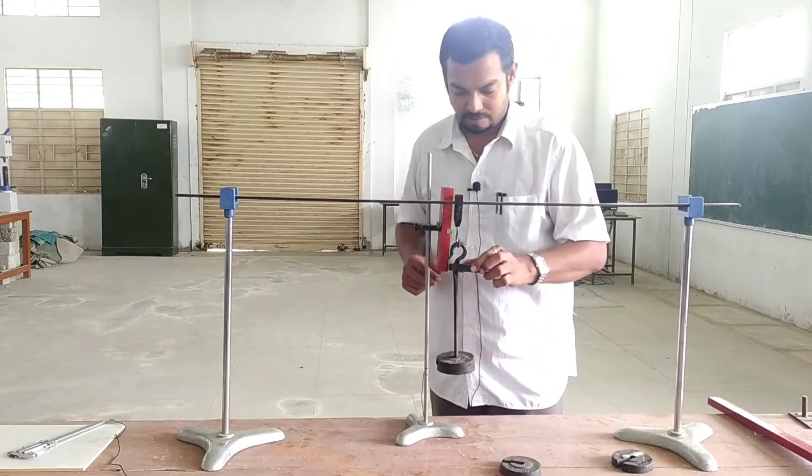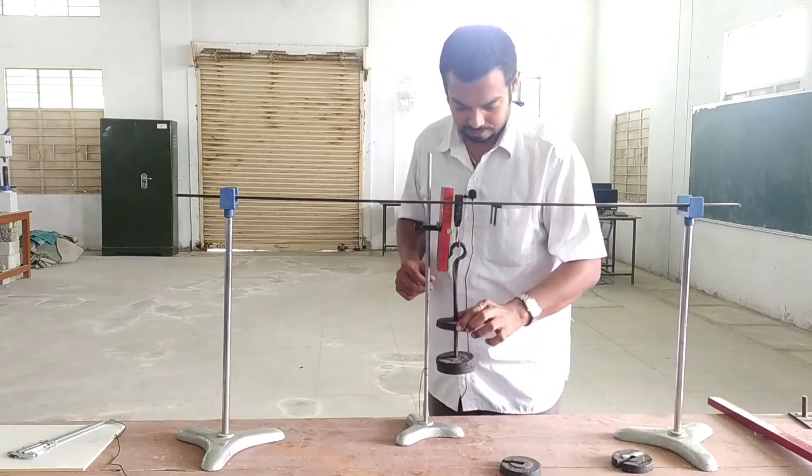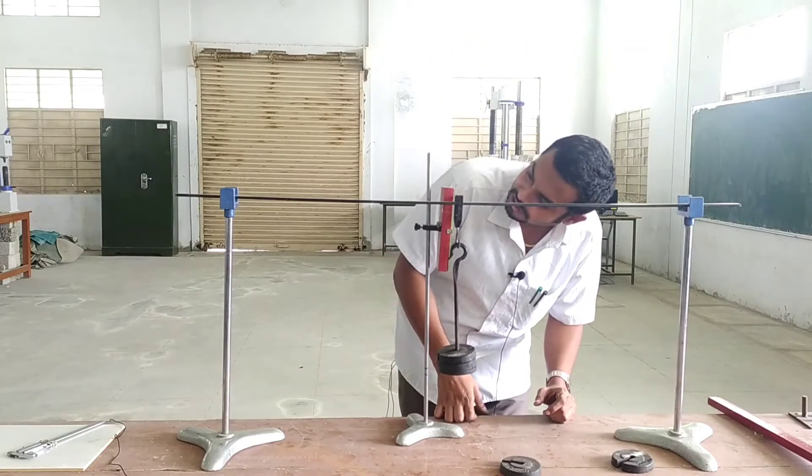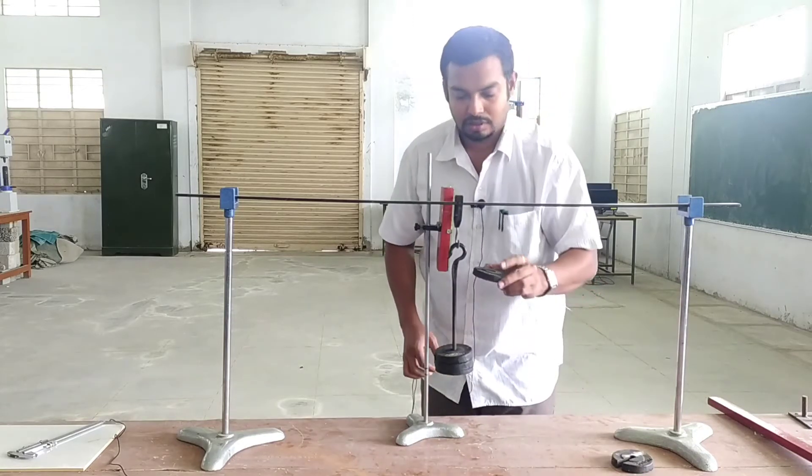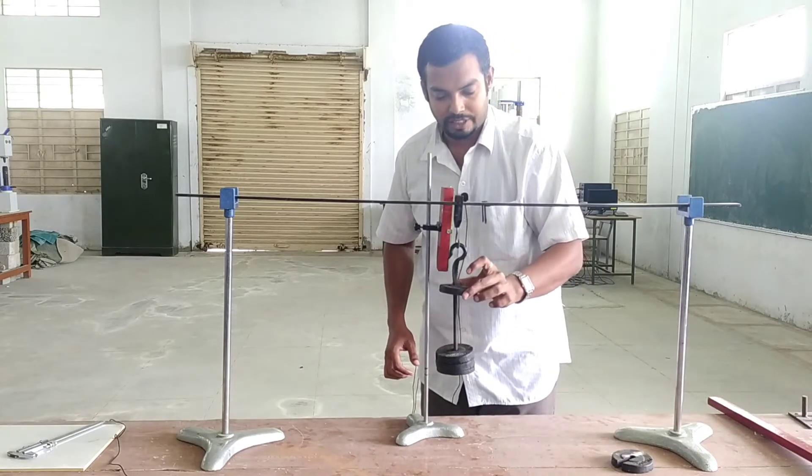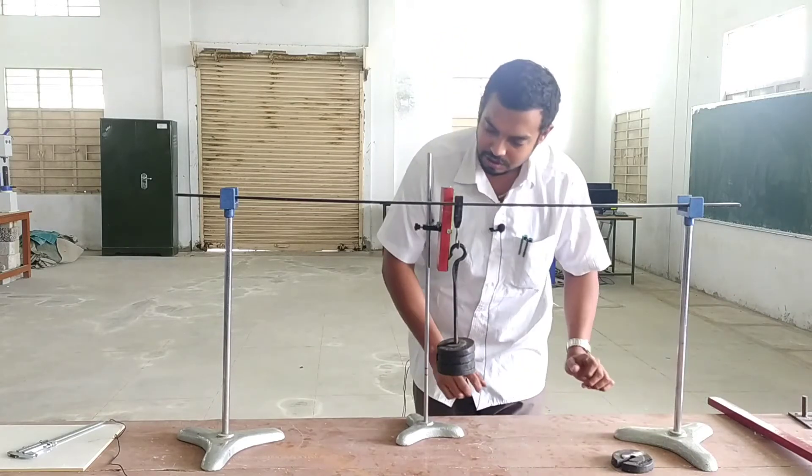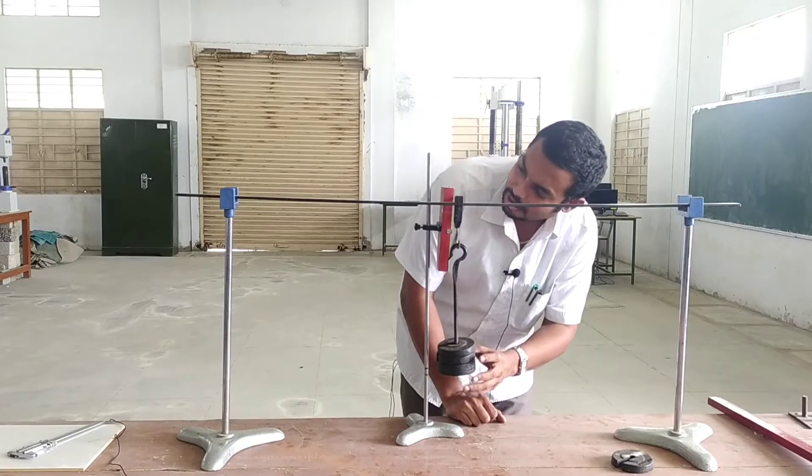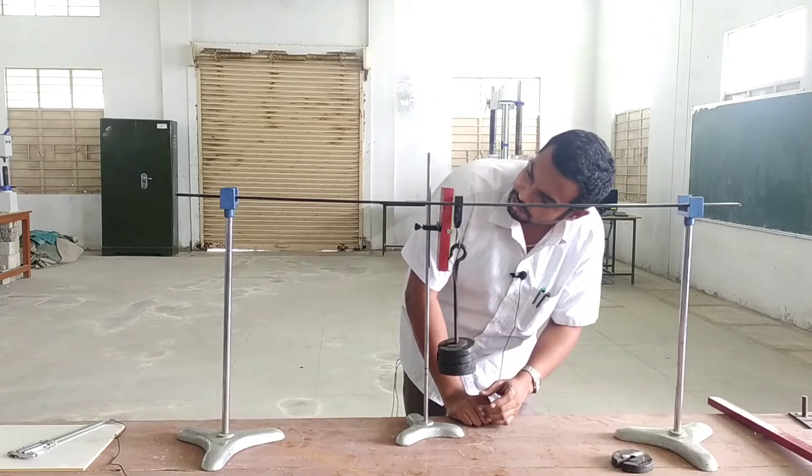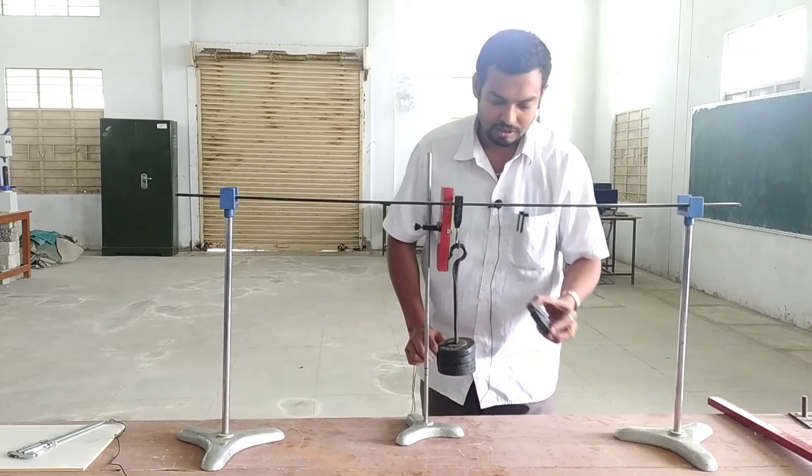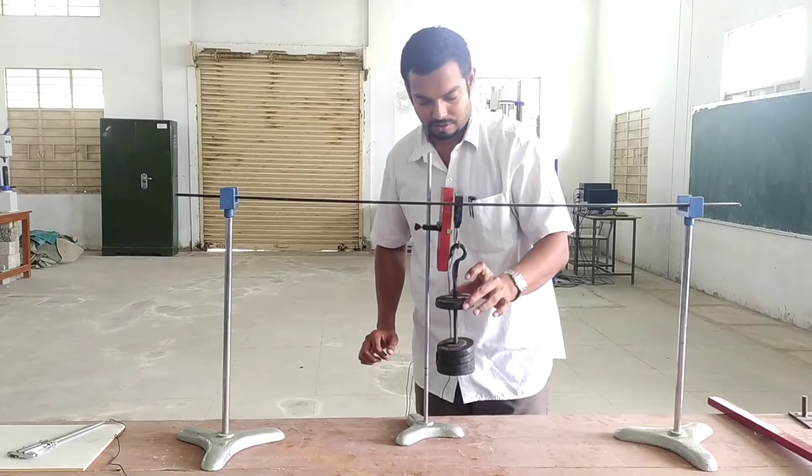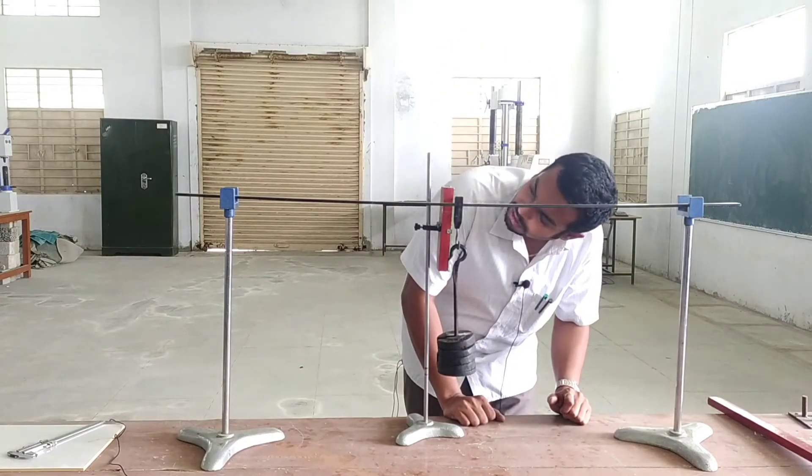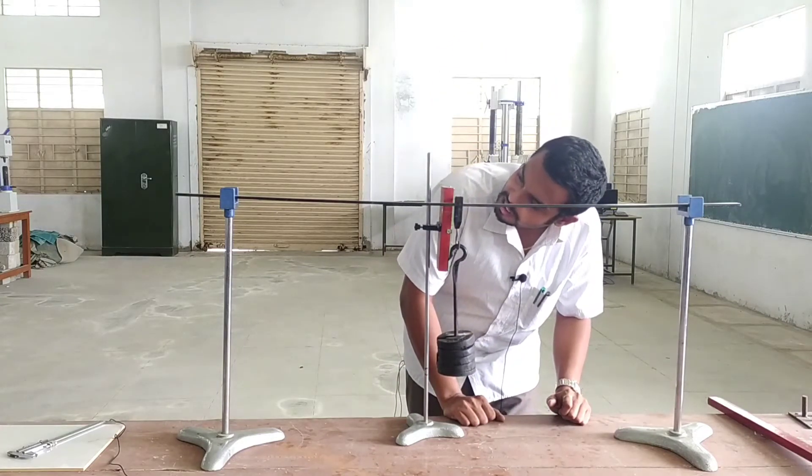Next, one more 500 grams place, 1 kilogram. Deflection 3.5. Next, another one 500 grams. Deflection 5 mm. Next, one more 500 grams. Deflection 6 mm.